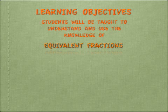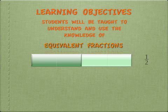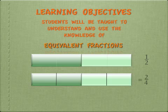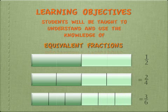This is the learning objective for this course where students will be taught to understand and use the knowledge of equivalent fractions. 1 over 2 is equal to 2 over 4 and is equal to 3 over 6. So here again, I'm utilizing visual spatial intelligence for students to understand the meaning of equivalent fractions.